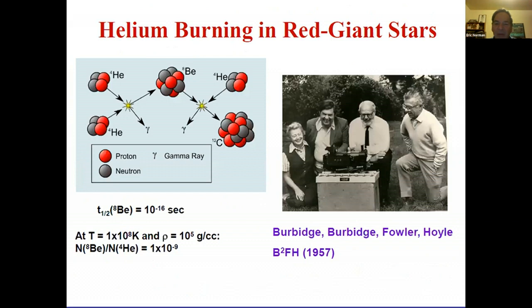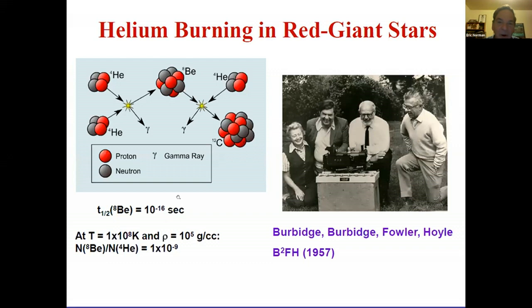In any star, there's a fight between gravity - trying to compress the star - and the radiation pressure produced by nuclear reactions in the core. In our Sun this fight has been going on for about 4.5 billion years and will continue for another 4-5 billion years. At that point all the hydrogen in the core will be converted to helium, energy generation stops, the core contracts due to gravity, density and temperature rise, and eventually the helium will ignite - beginning helium burning in the nuclear sense. Burbidge, Burbidge, Fowler, and Hoyle figured this out in the 1950s.